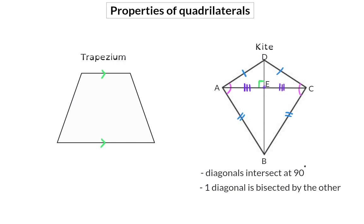DB is not bisected because DE is shorter than EB. The third property a kite has in terms of diagonals is that one diagonal bisects the angles. When we draw diagonal DB, it halves or bisects angle D as well as angle B, so the two angles formed at D are equal in size and the same goes for the two angles at B. However, diagonal AC does not bisect the angles — the top angle at A is smaller than the bottom angle at A.